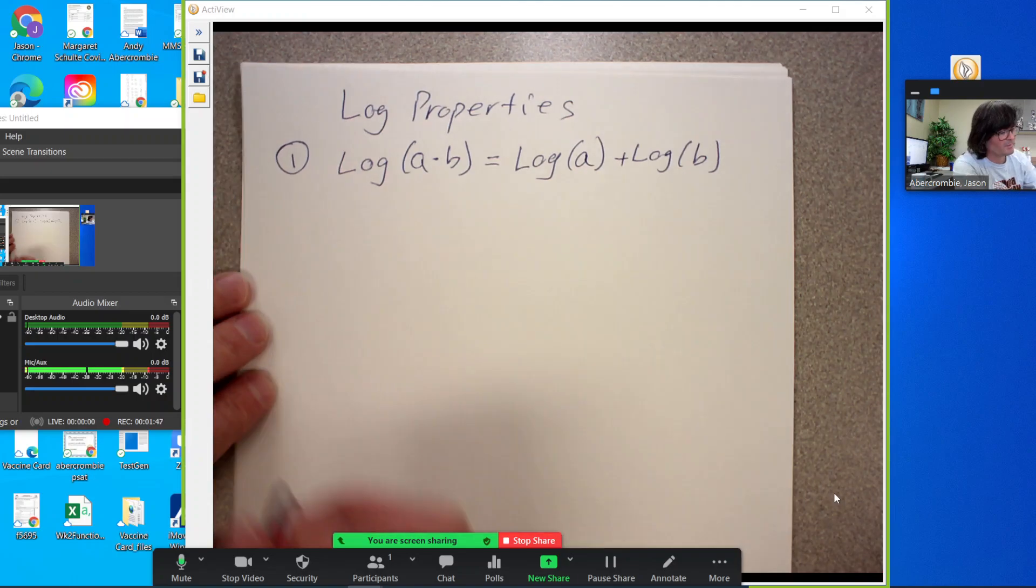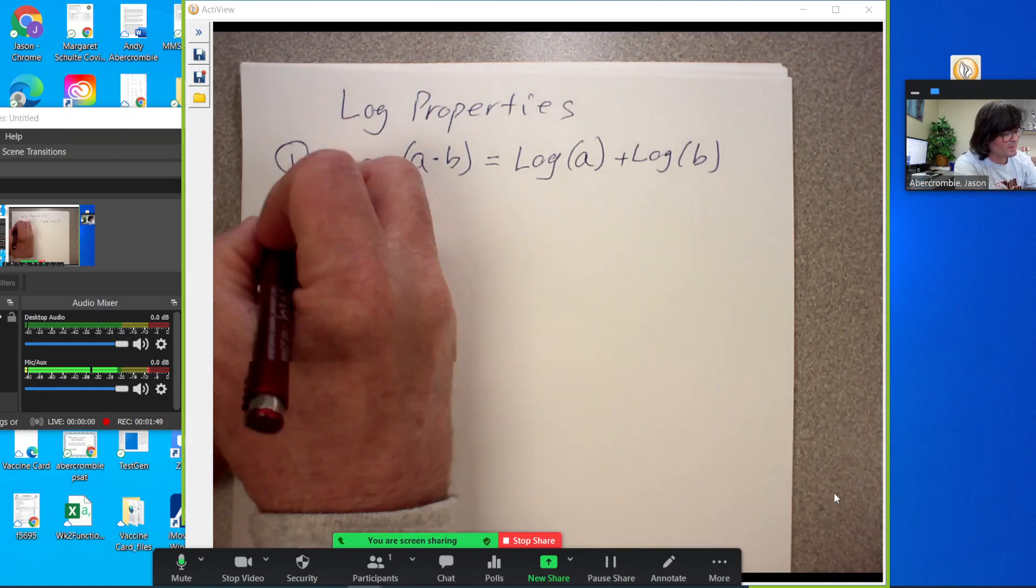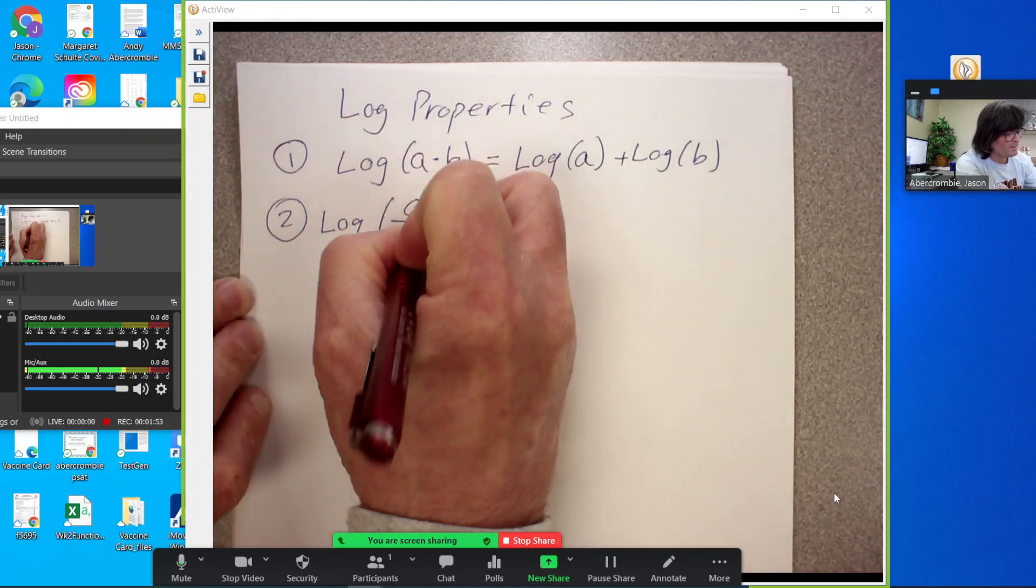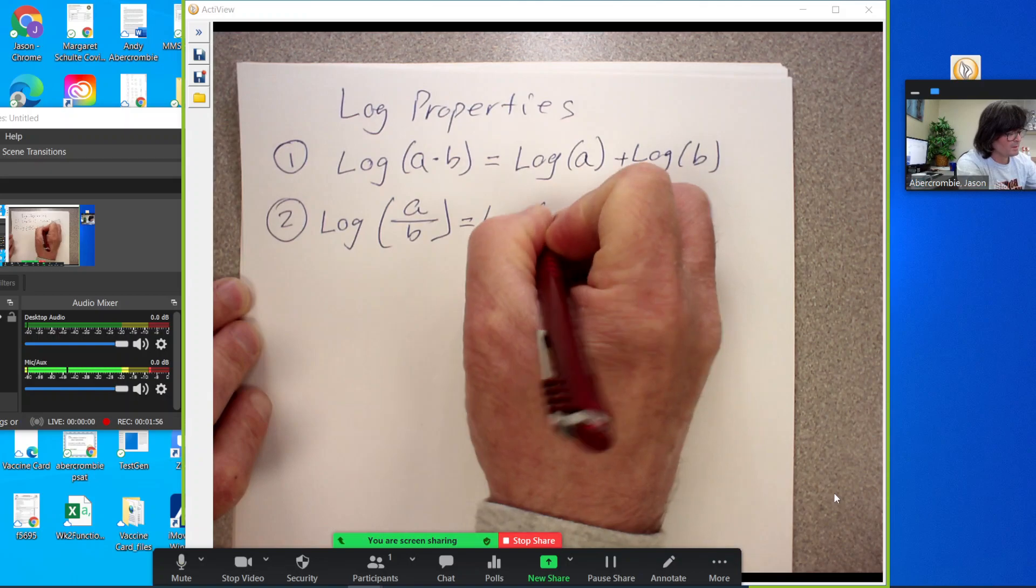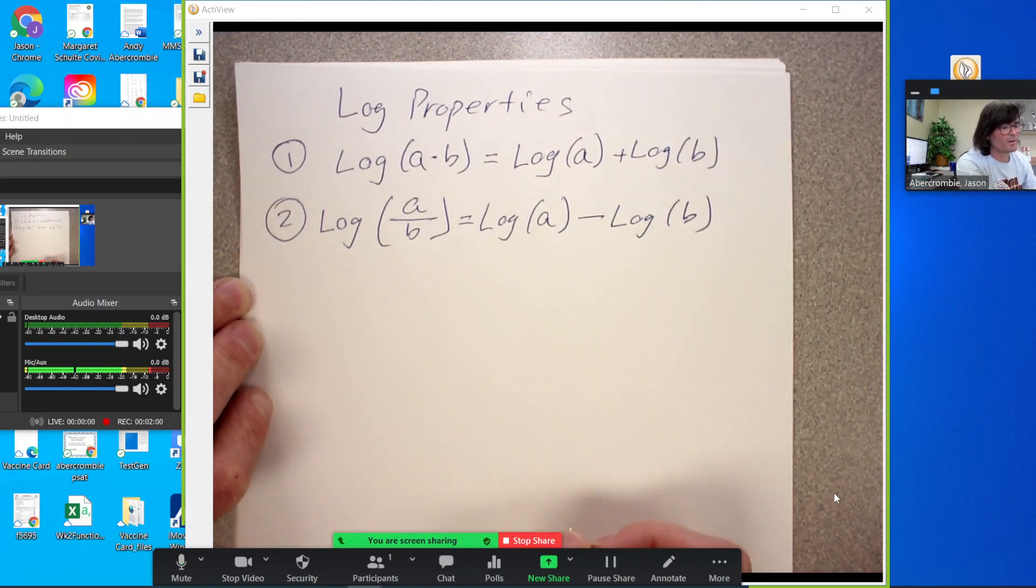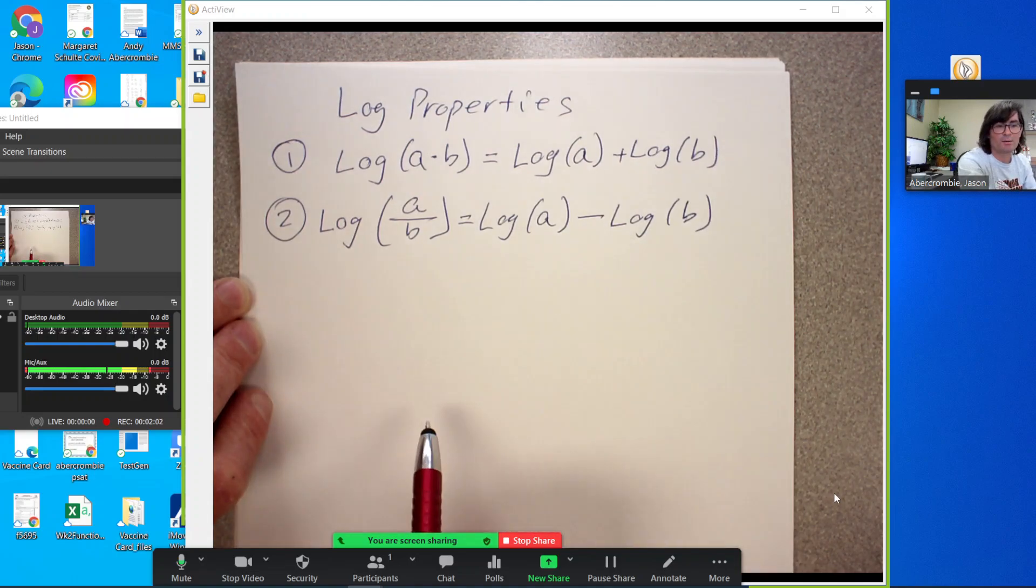So it allows you to split up multiplication inside a log. The second one is division a over b. So log of a minus the log of b. So multiply and addition go together, divide and subtraction go together.